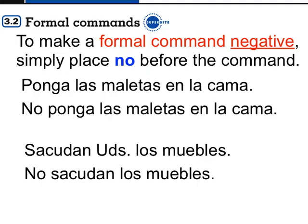Here's something you're going to like, señoritas. To make a formal command negative, you simply place no before the command. For example, ponga las maletas en la cama is affirmative — put the suitcases on the bed. To make it negative, you just say no: no ponga usted las maletas en la cama. Sacudan ustedes los muebles — to make it negative, no sacudan. The command itself does not change.